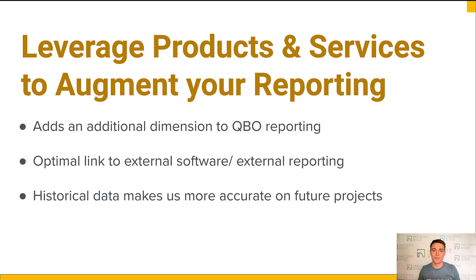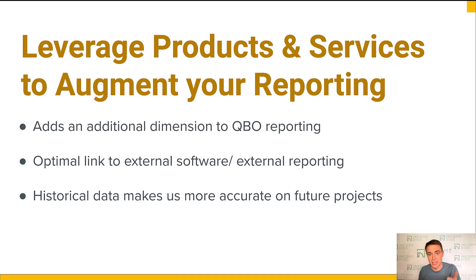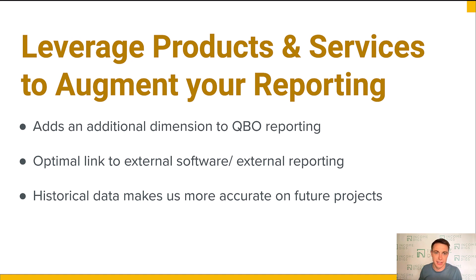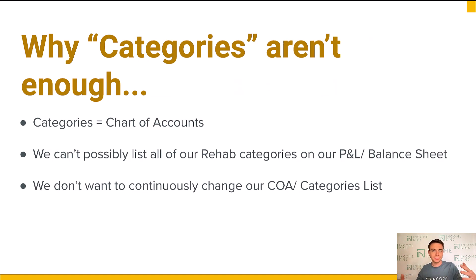Historical data makes us way more accurate in estimating future projects — that's what job costing is all about. We need to know how much we spent on our projects: first, because it might mean we're invoicing customers based on what we're incurring, so the more detailed we are the more we can get paid; and second, whether you're doing time and materials or fixed price, job costing lets you find out where you spent your money so your next estimate is way more accurate. The only way to do it, in my opinion, is to use products and services.